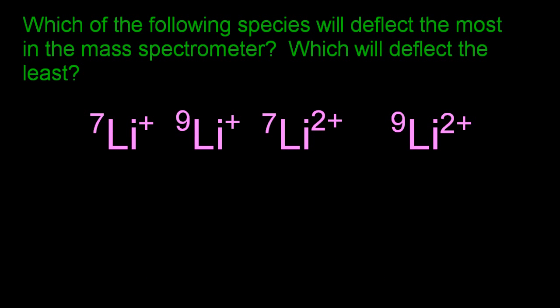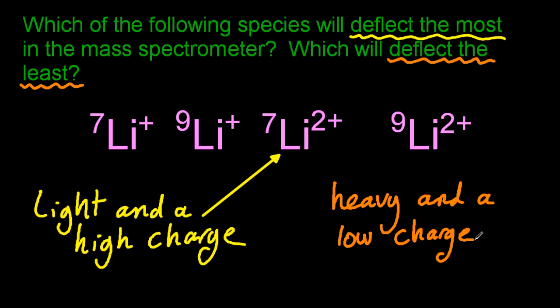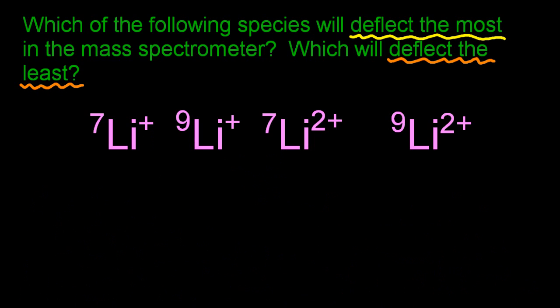Question: which of the following will deflect the most in the mass spectrometer and which will deflect the least? So deflecting the most means it bends the most. So it's going to be the lighter one—less mass, less inertia, less resistance to change in direction. And the one with the high charge, the higher charge one, is going to interact with the magnetic field at the deflector and bend more. So that's going to be the lightest one with the highest charge. And what's going to deflect the least? So the one that's going to hardly bend at all. Well, that's going to be the opposite one, isn't it? The heavy one, high mass, high inertia, more resistance to a change in direction. And the one with the low charge will interact with the magnetic field less.